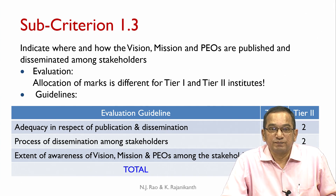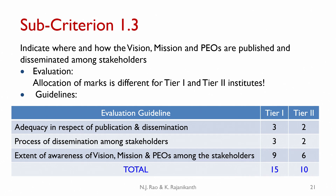Sub-criterion 1.3 requires indicating where and how the vision, mission and PEOs are published and disseminated among stakeholders. The allocation of marks is different for Tier 1 and Tier 2 Institutes. There are three evaluation guidelines: adequacy of publication and dissemination; process of dissemination among stakeholders; and extent of awareness among stakeholders. For Tier 1, the marks are 3, 3 and 9, totaling 15; for Tier 2 they are 2, 2 and 6, totaling 10.